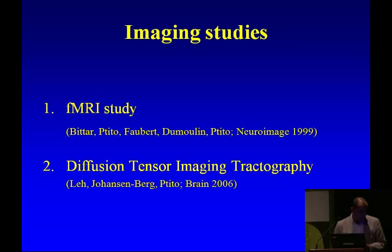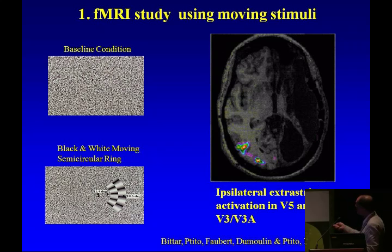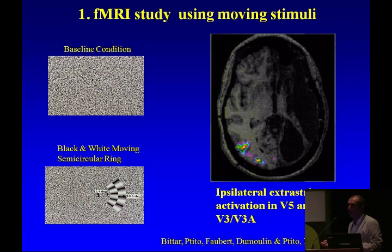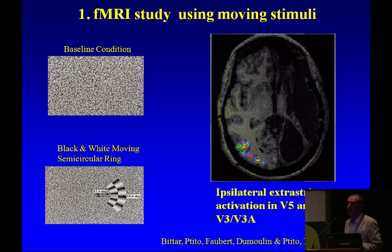As technology developed, we conducted fMRI studies. We used a baseline condition and a moving target with gratings moving in opposite directions to rule out scatter. When making presentations in the blind field, we find ipsilateral extrastriate activations in areas V5, V3, and V3A — this region is activated by stimulation from the blind field. Somehow the information gets to the other hemisphere, and combining this with the behavioral experiments, we had a strong case for the superior collicula being involved.